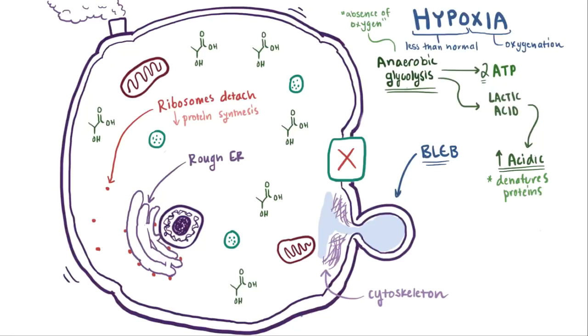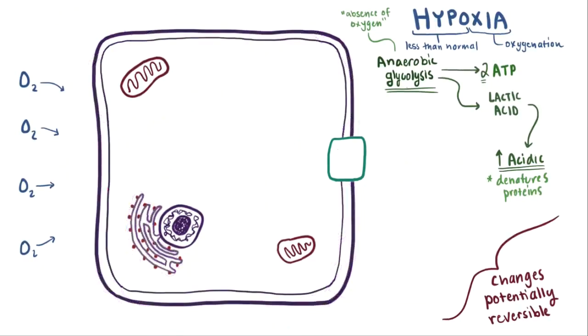Now, up to this point, it's not all bad, because one super important thing about these processes that happen to the cell is that they're potentially reversible, meaning that if we all of a sudden get oxygen again and start making ATP, then these changes aren't necessarily permanent.